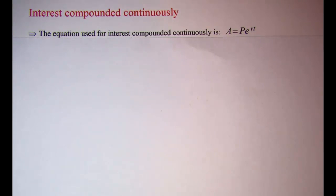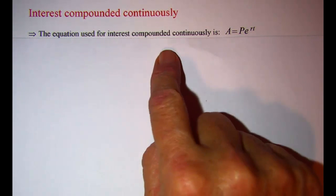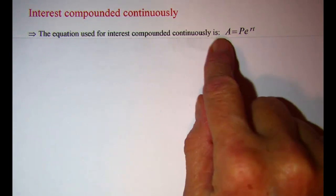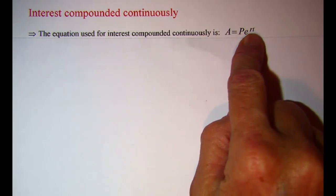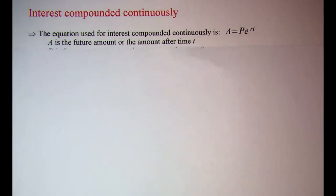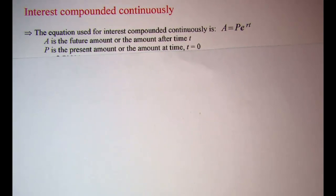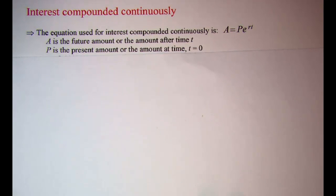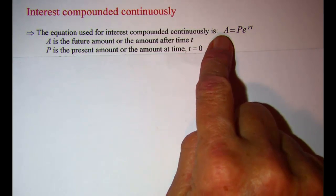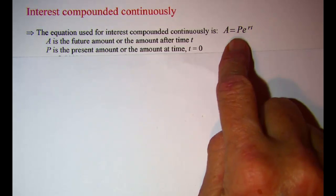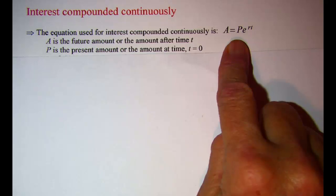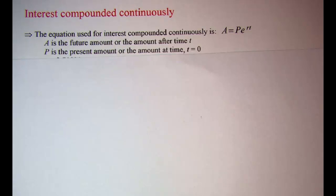The equation used for this type of situation is A equals P times E raised to the RT. The A is the future amount, or the amount in the account after time T. The P is sometimes called principal. It is the present amount, or the amount being deposited into the account at time zero.